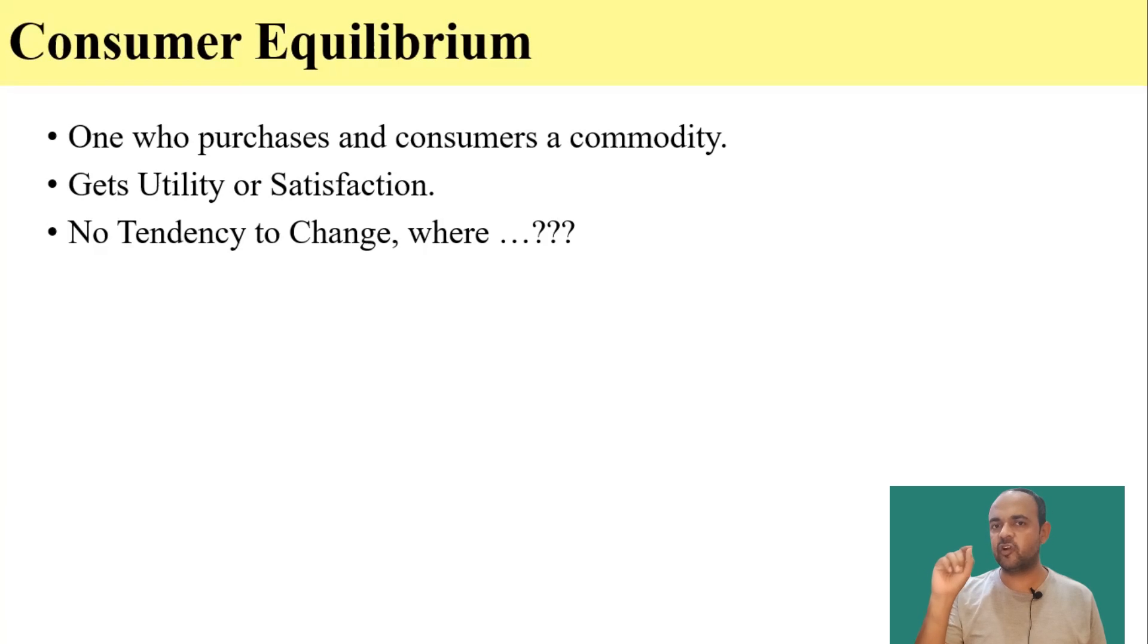Therefore, the point where the consumer's utility will be at maximum, consumer would not like that point to change a bit. He or she will not consume anything more than that or anything less than that. So therefore, the consumer will be in equilibrium at a point where his or her satisfaction is at maximum.